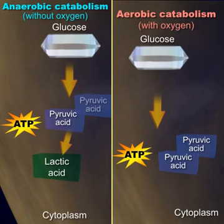Glucose is broken down under the following two different conditions: anaerobic, meaning without oxygen, and aerobic, meaning with oxygen.